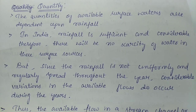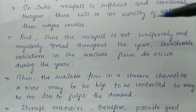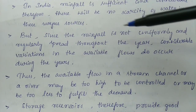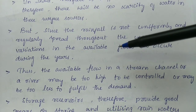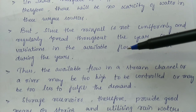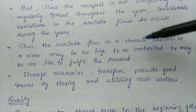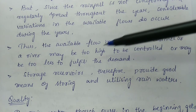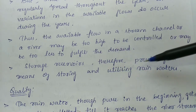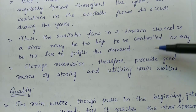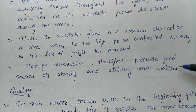Even though nowadays rainfall is also quite varying, since rainfall is not uniform and regular throughout the year, considerable variations in the available flow do occur. The available flow in a stream channel or a river may be too high to be controlled or may be too less to fulfill the demand. Storage reservoirs should therefore be provided as a good means for storing the water.